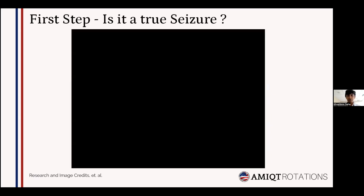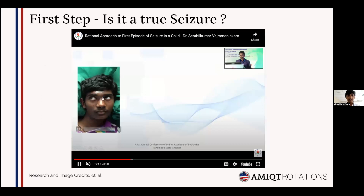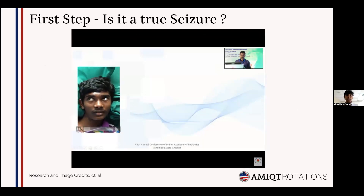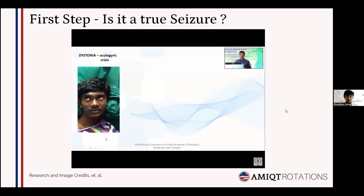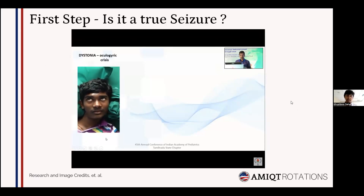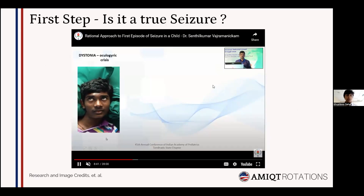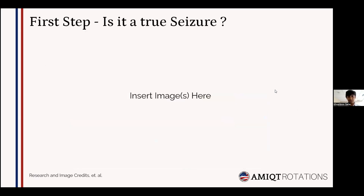In this next video you can see a classic upward gaze with the patient sticking out the tongue — a typical case of oculogyric crisis, which is a side effect of antipsychotics and dopamine antagonists like metoclopramide. Treatment is diphenhydramine and benzodiazepines; anticonvulsant agents are not required.